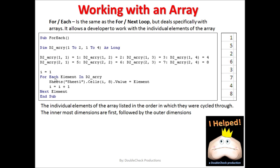Now whenever I actually print these out using the for-each loop, they don't print in ascending order. They print in a different order: 1, 5, 2, 6, and so on. The individual elements in the array are listed in the order in which they were cycled through by the for-each loop.